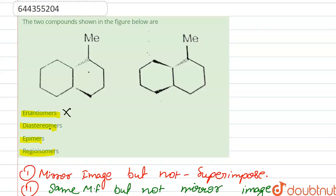Next, for diastereomers: they have the same molecular formula, as you can see, and it is not a mirror image — so it is a diastereomer. Also, the methyl group is added at the same position, so the position of the functional group does not vary, meaning it is not a regioisomer.